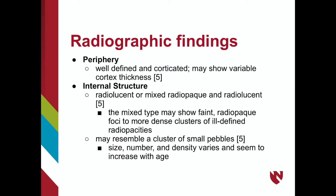On a radiograph, an AOT lesion usually displays a well-defined and corticated peripheral border of variable thickness. In two-thirds of cases, the internal appearance of AOT lesions is either largely radiolucent or mixed radiopacity. The appearance of the mixed radiopacity may vary from a faint, delicate, radiopaque foci to one with more dense clusters with ill-defined calcifications present.